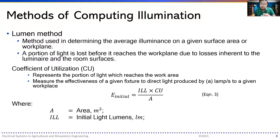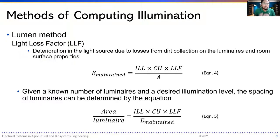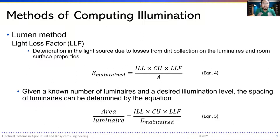The initial illuminance equals the initial lumens times CU divided by area A. There is also a light loss factor (LLF) to account for deterioration due to dirt accumulation and wear of luminaires. The maintained illumination E-maintained equals the initial lumens times CU times LLF divided by area. Given a known number of luminaires and a desired illumination level, the spacing of luminaires is determined by: area per luminaire = initial lumens × CU × LLF / E-maintained.